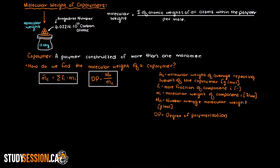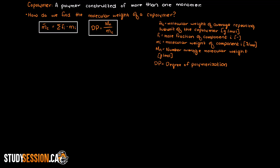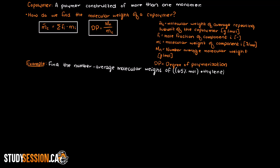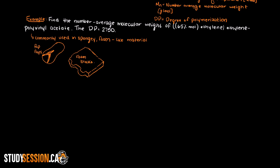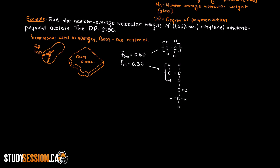Now that we have gone over the concepts and developed some relevant formulas, let's go through a quick example. Our problem states to calculate the number average molecular weight of ethylene polyvinyl acetate. This copolymer is commonly used in spongy, foam-like materials, such as flip-flops and foam blocks. In this example, we are told that the ethylene molar fraction in this copolymer is 0.65. Therefore, polyvinyl acetate makes up 35% of this polymer's molecular composition. We are also told that the degree of polymerization for this copolymer is 2750. Firstly, we must find the molecular weights of both ethylene and polyvinyl acetate.